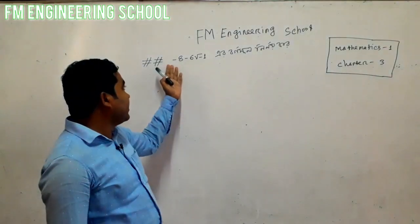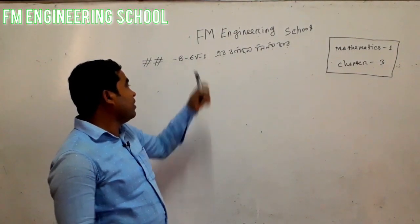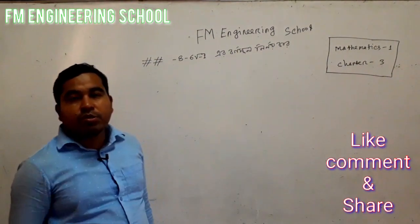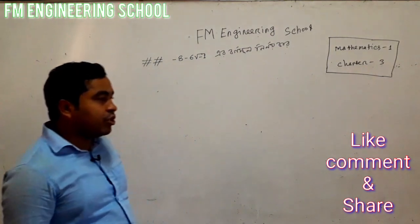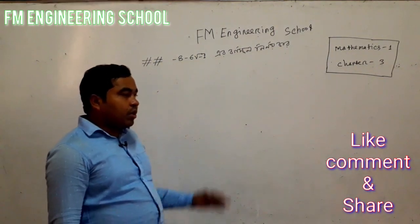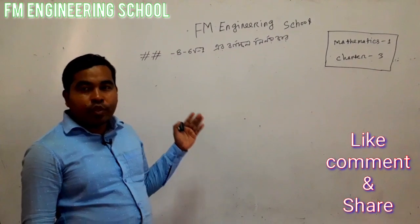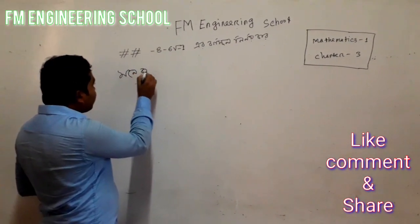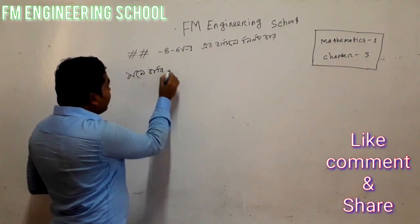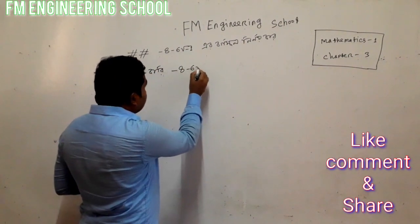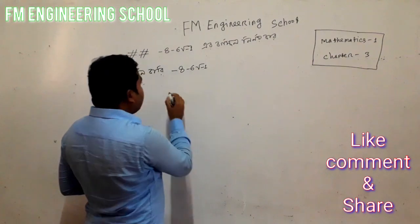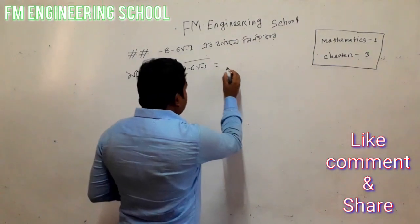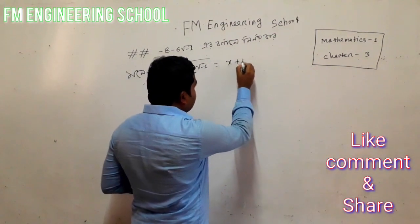This is the complex number (Zotil-Rashin). The first problem is: find the square root of minus 8 minus 6i. And the second problem is: find the square root of minus 8 minus 6i (root over minus 8).